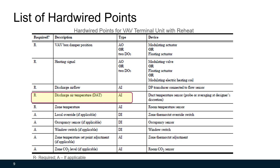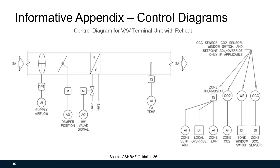Optional points include local override, occupancy sensor or window switch, and CO2 levels. Most of these points are for demand-controlled ventilation logic. Standard control schematic diagrams for these AHU and VAV terminal unit types are also provided in this guideline. The control and monitoring points shown in these diagrams can be found from the list of hardwired points. Note that in the diagram, discharge air temperature is labeled as 'SA temp' or supply air temperature.